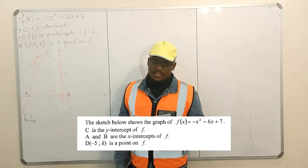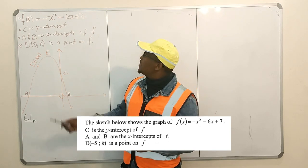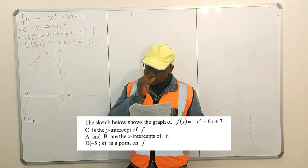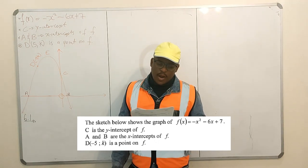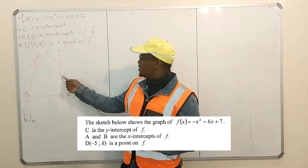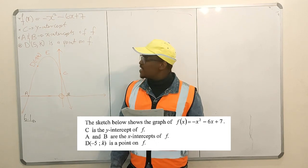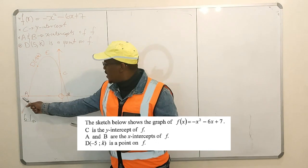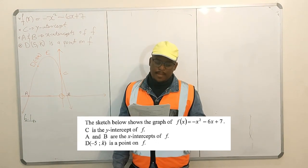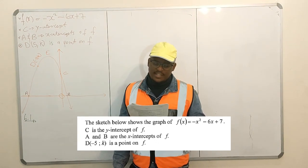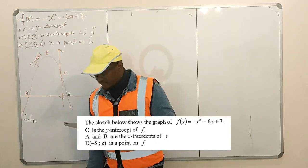Question 6. The sketch below shows the graph of f(x) = -x² - 6x + 7. C is the y-intercept of f, and a and b are the x-intercepts of f. The point d is a point on f.